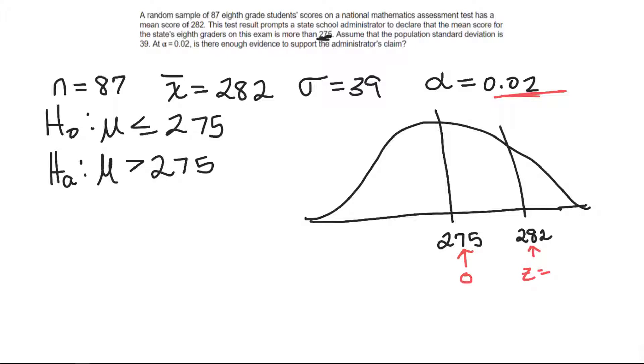And this is where we use the formula that we take our sample mean minus our null over the standard deviation and when you're given a sample size, divide it by the sample size. So my sample mean was 282 minus the null mean, 275,